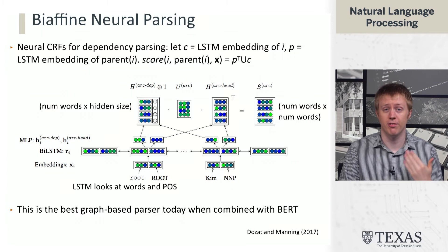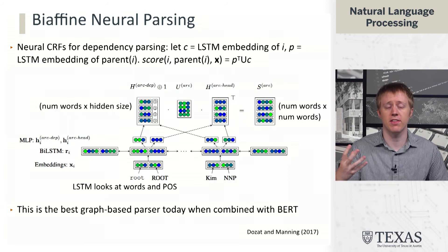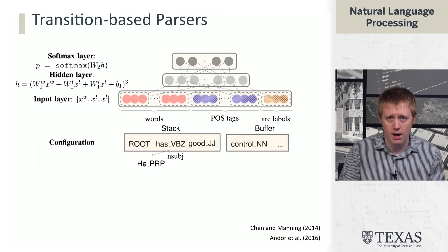This came out in 2017, before ELMo and BERT. Upgrading this with BERT basically gives you the best graph-based dependency parser. Between the ideas from CRFs and feedforward neural networks, we can combine these things and build state-of-the-art tools once we put in the right dynamic programs for inference. We've now seen all the pieces to understand what's going into these state-of-the-art models.